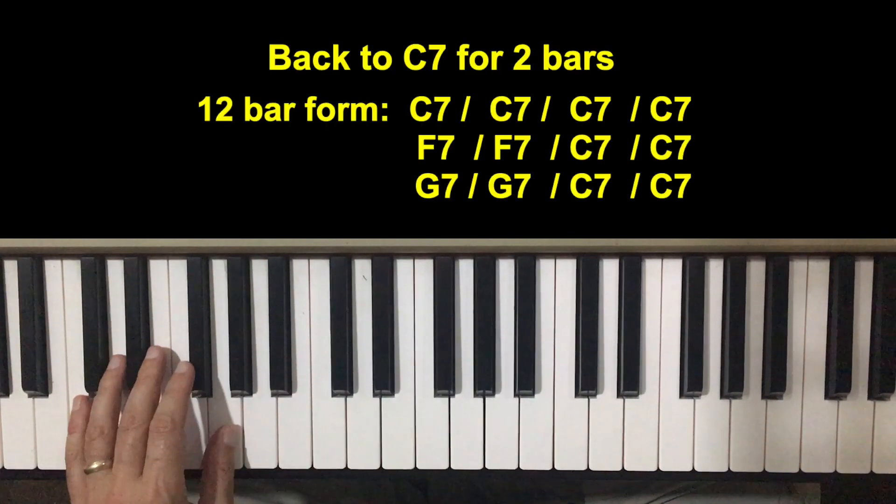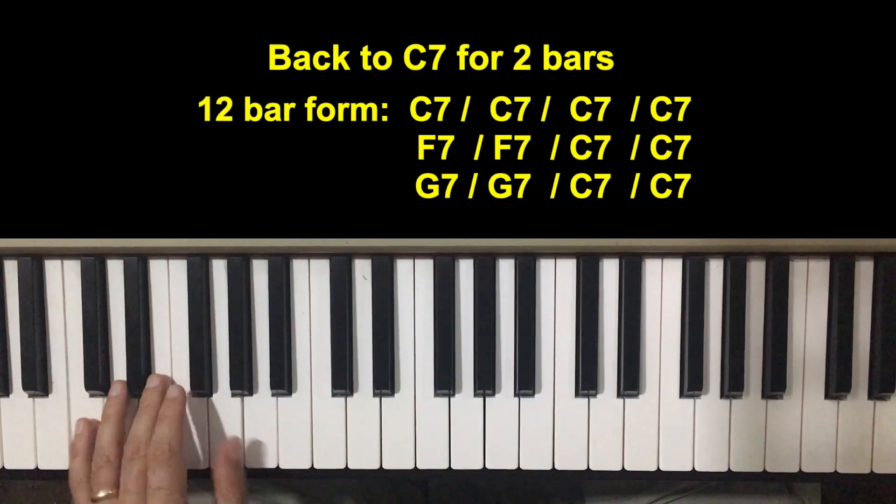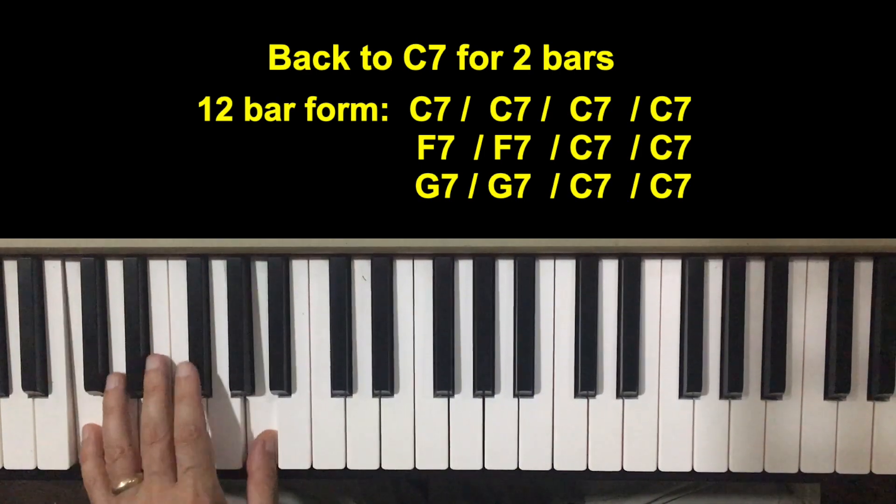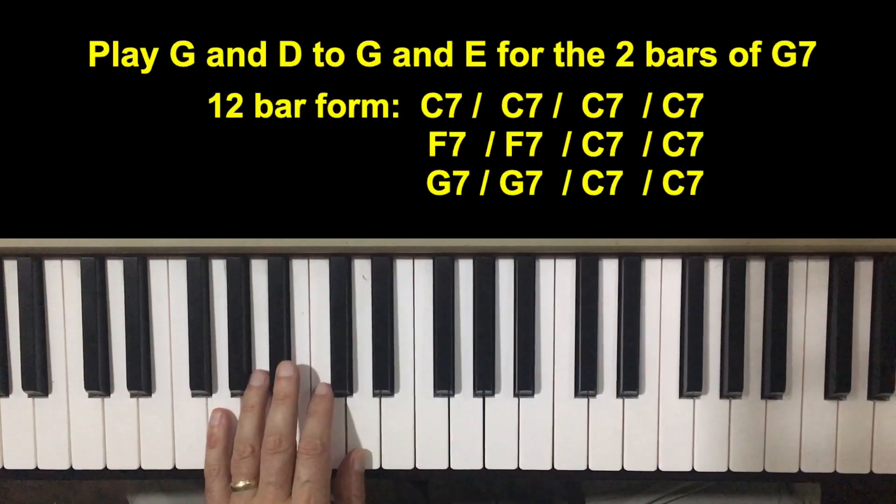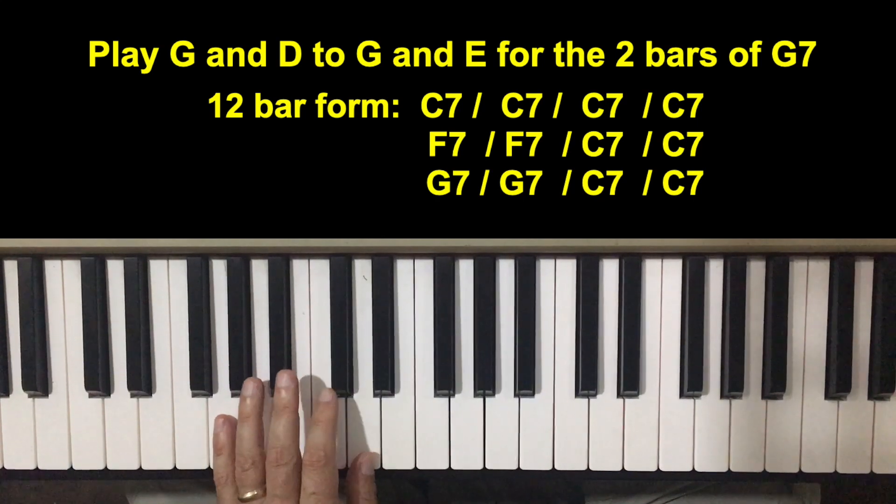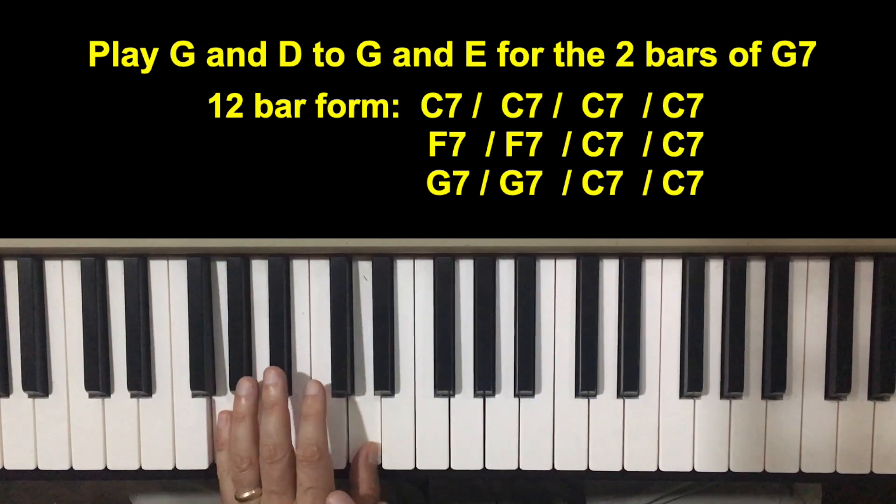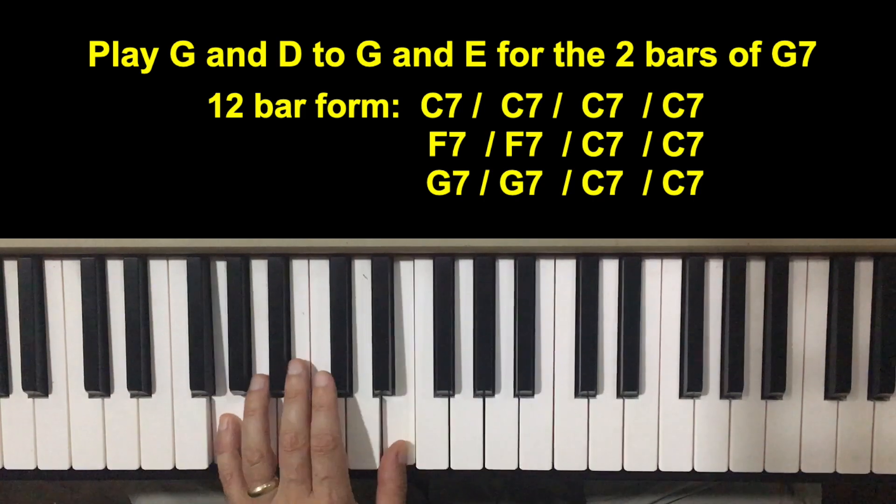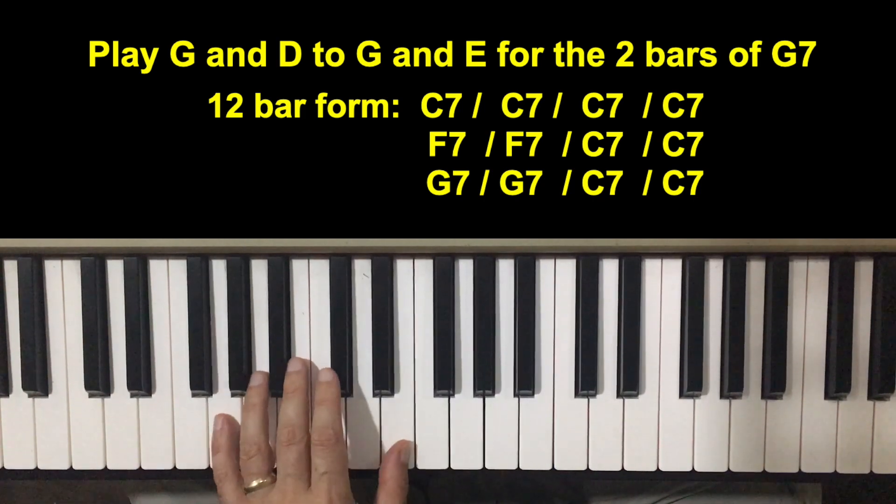Back to C for two more bars. C-G, C-A. One, two, three, four. We're coming up to the last four bars. Now we're ending. We have to go up to a G. Pinky on a G, thumb on a D. G-D-G. One, two, three, four.